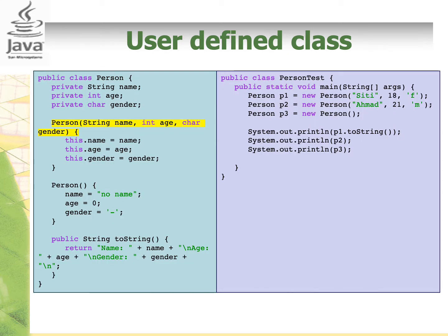So how do we declare an array of objects? Let's look at how we would normally write our code. Say that we have a class called Person and PersonTest. In the Person class, we have three private instance variables: String name, int h, and char gender. We have two constructors. The first constructor has three parameters: String name, int h, and char gender. As the variable names are the same as the instance variables, we need to use the 'this' keyword to differentiate them. So this.name refers to the instance variable, and all instance variables will have the value of whatever the user passes in when the constructor is called.